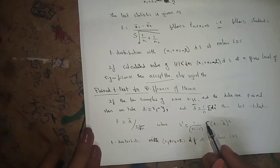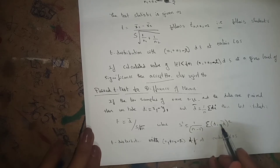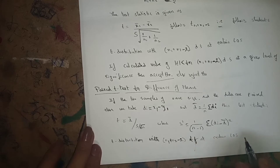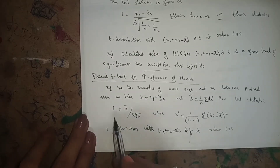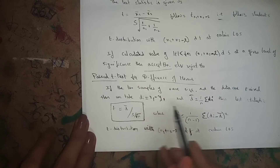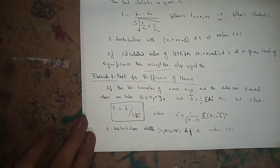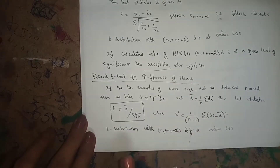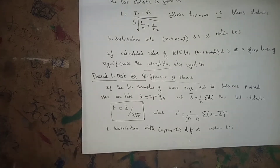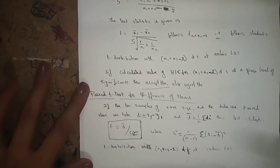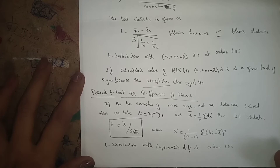Where s² = [1 / (n − 1)] × Σ(d_i − d-bar)², following the t-distribution with n1 + n2 − 2 degrees of freedom at a certain level of significance. So d_i = x1 − y1, d-bar = (1/n) × Σd_i, and s² = [1/(n−1)] × Σ(d_i − d-bar)². This is the paired t-test formula.